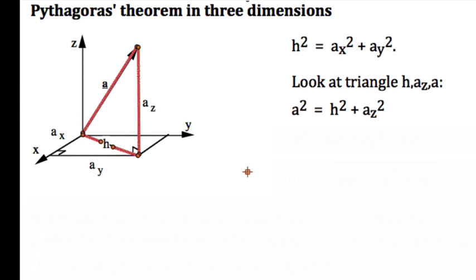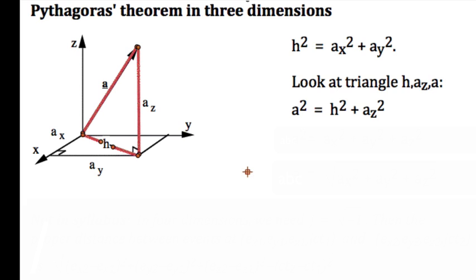Here, Pythagoras gives a squared equals h squared plus az squared. Substituting for h gives us a squared equals ax squared plus ay squared plus az squared. And that gives us the expression for the magnitude of a in terms of its components: a equals square root of ax squared plus ay squared plus az squared.